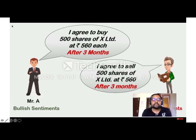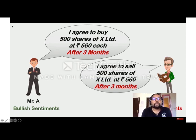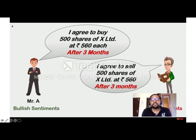So there are two parties, Mr. A and Mr. B. Mr. A is having bullish sentiments and Mr. B is having bearish sentiments. Mr. A says: 'I agree to buy 500 shares of X Limited at Rs. 560 each after three months.' And Mr. B says: 'I agree to sell 500 shares of X Limited at Rs. 560 after three months.'